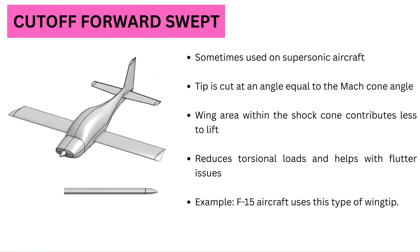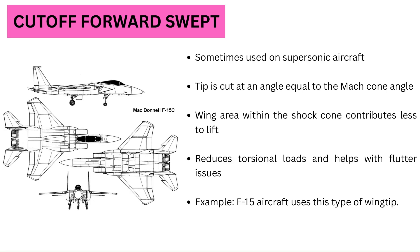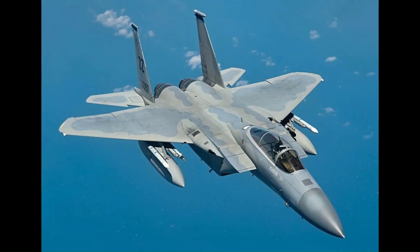Cut-off forward swept wingtip: this type is sometimes used on supersonic aircraft. The tip is cut off at an angle equal to the Mach cone angle. This is done because the area of the wing within the shock cone will contribute less to lift. This tip shape also helps in reducing torsional loads and can help with flutter problems. An example of this wingtip can be seen on the F-15 aircraft.